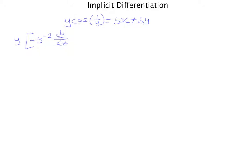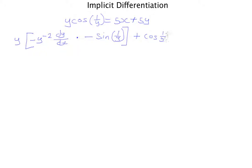So we were differentiating cos(1/y). That is the first part of the chain rule — differentiating the inside. Now we differentiate the outside function: the derivative of cos is minus sine, and we write back 1/y. That completes the first part of the product rule. For the second part, we keep cos(1/y) and differentiate y, which simply gives dy/dx. That finishes the derivative of the left-hand side.